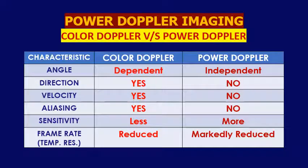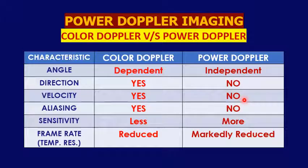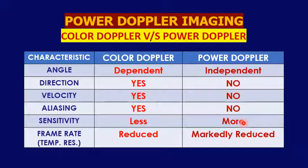In summary, comparing color Doppler and Power Doppler: color Doppler is angle dependent, Power Doppler is not. Color Doppler shows flow direction and velocity; Power Doppler shows neither. Aliasing can occur with color Doppler but not with Power Doppler. Power Doppler is more sensitive to low velocities, but the frame rate is markedly reduced compared to color Doppler. Thank you, and I hope that was beneficial — see you later, bye bye.